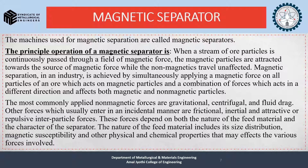The non-magnetic particles travel unaffected. Magnetic separation in industry is achieved by simultaneously applying a magnetic force on all particles of an ore, which acts on magnetic particles, and a combination of forces acting in a different direction affecting both magnetic and non-magnetic particles. The most commonly applied non-magnetic forces are gravitational, centrifugal, and fluid drag. Other forces that usually enter incidentally are frictional, inertial, and attractive or repulsive inter-particle forces.